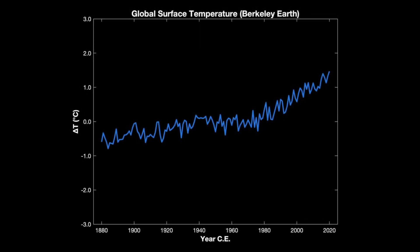Here's a graph you've seen countless times. This is a time series of global mean surface temperatures, in this case from the Berkeley Earth Project from 1880 to 2020. Temperatures are plotted as departures in degrees Celsius from the average value of the mid-20th century. Although it's clear there is an upward trend, at least since 1970, this is not a great way to present and communicate climate change, in my opinion.